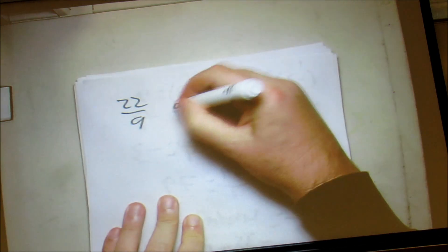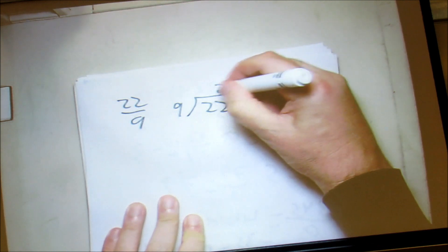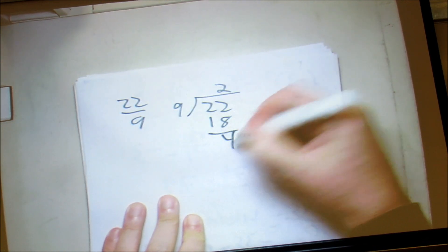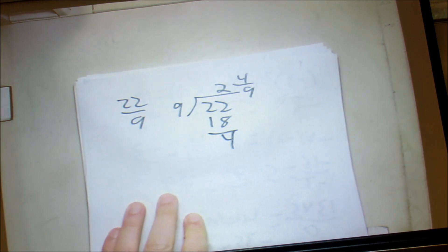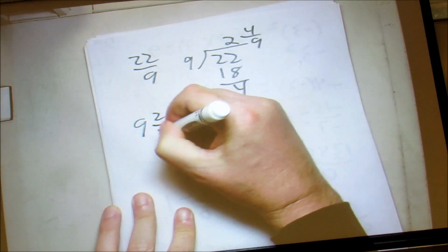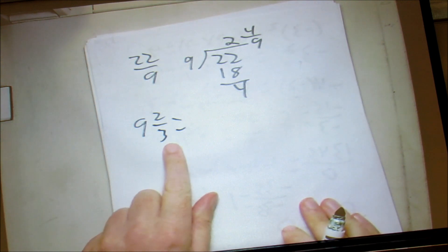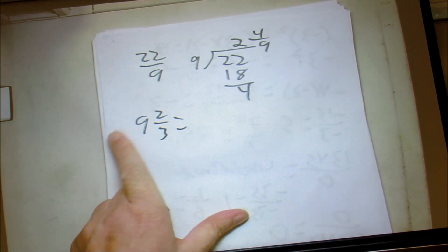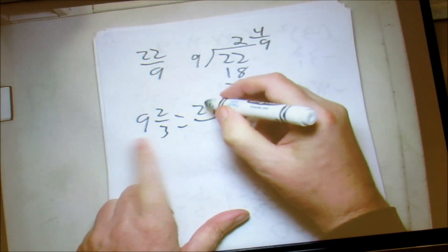You're going to be asked to turn an improper fraction into a mixed numeral. Say we have 22 over 9 — we divide: 9 into 22 goes 2 times, 2 times 9 is 18, we have 4 left over, so we get 2 and 4 over 9. Going the other way, if we have 9 and 2 thirds, we multiply 3 times 9 is 27, plus 2 is 29, and it's still over 3, giving 29 over 3.